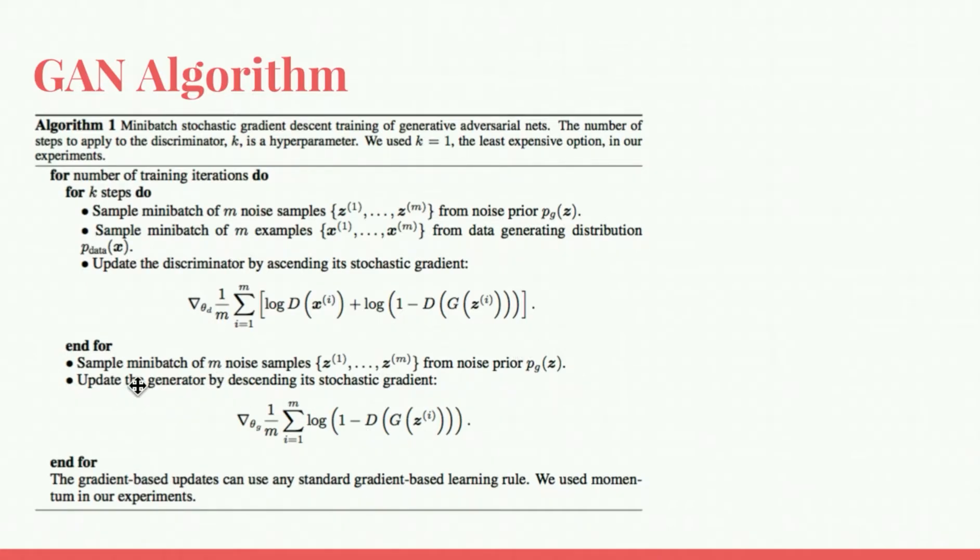After you complete that step, you again sample M noise samples and update the generator. The generator is attempting to minimize the log of that penalty term. And again, because that penalty is negative, minimizing it will make it large in the negative sense.